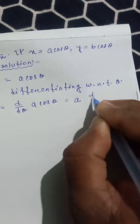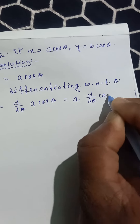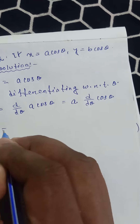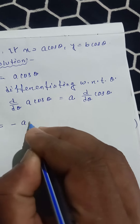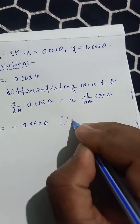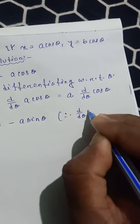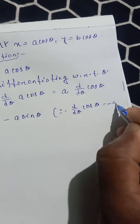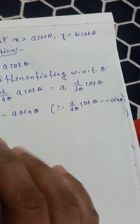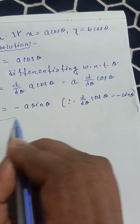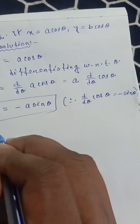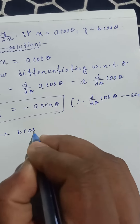Since a is constant, dx by d theta equals a times d by d theta of cos theta. The derivative of cos theta is minus sin theta, so dx by d theta equals minus a sin theta.